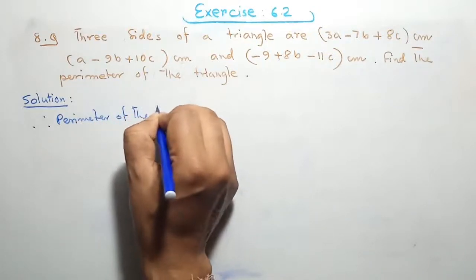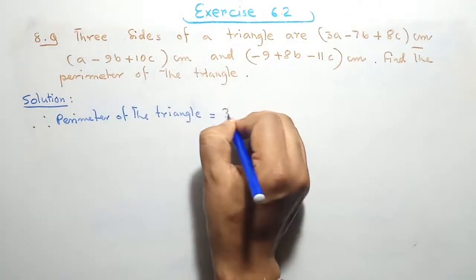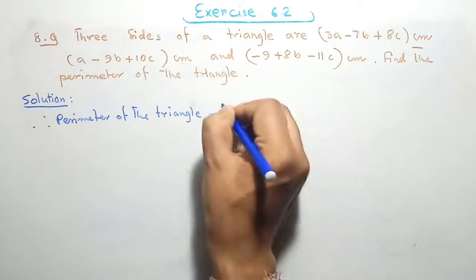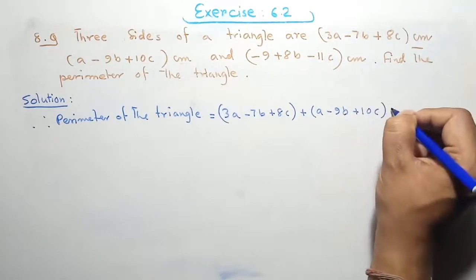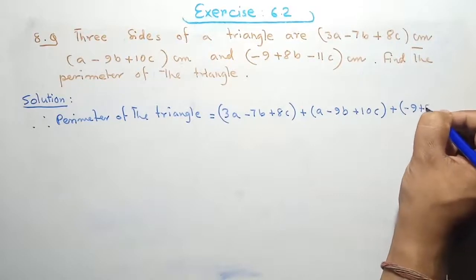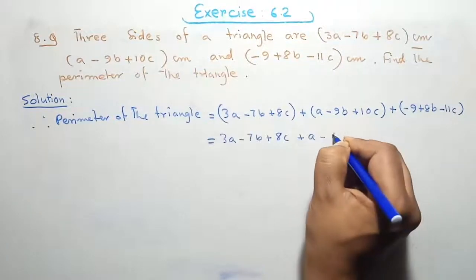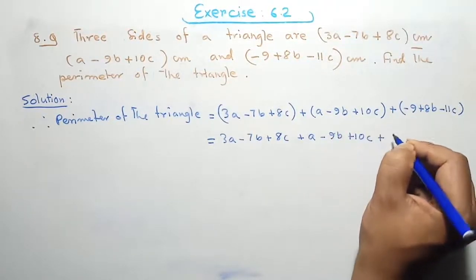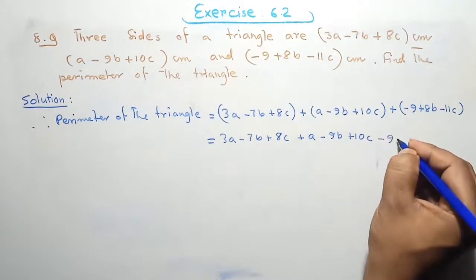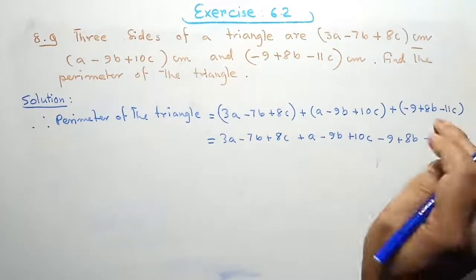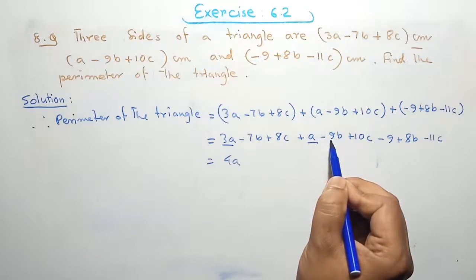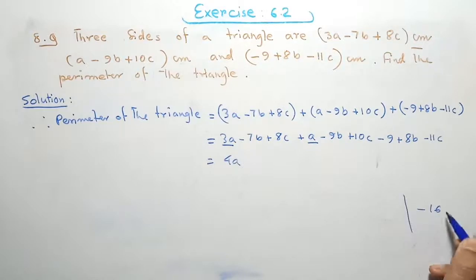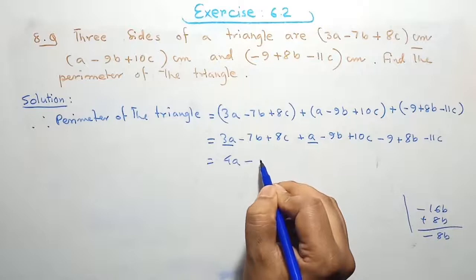Perimeter of the triangle equals 3a minus 7b plus 8c, plus a minus 9b plus 10c, plus minus 9 plus 8b minus 11c. Here 3a plus a equals 4a. For the b terms: negative 7b minus 9b equals negative 16b, and adding positive 8b gives negative 8b.